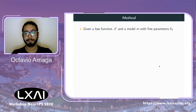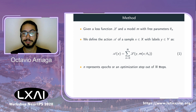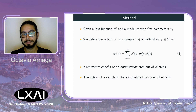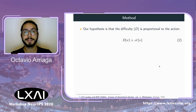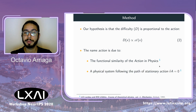So how does our method work? Given a loss function L and a model M with parameters theta, we define the action of a sample X with label Y such that little n represents the current epoch and big N represents the total number of epochs or optimization steps. Our action is the accumulated loss over all epochs, and our hypothesis is that difficulty is proportional to the action value. The name action was chosen given its functional similarity to action in physics, where a physical system follows the path of stationary action.